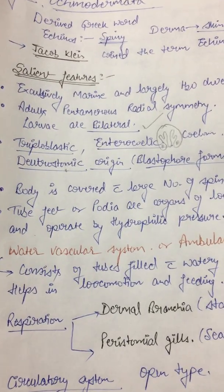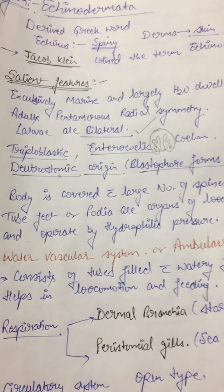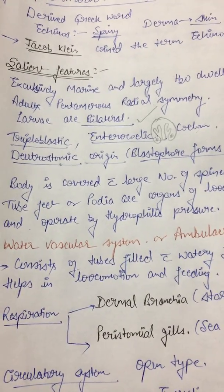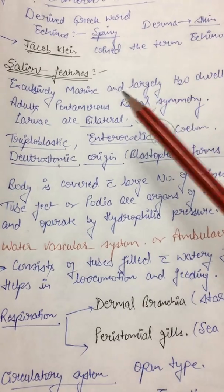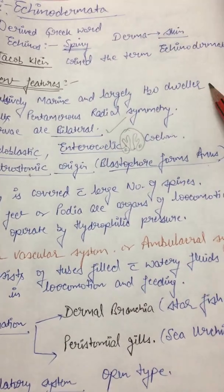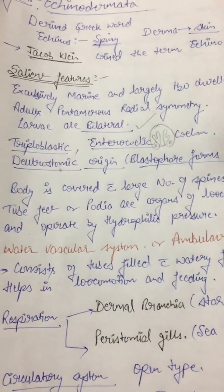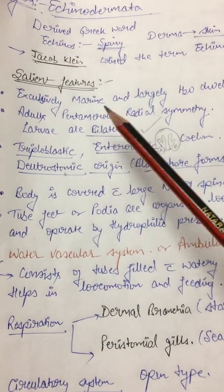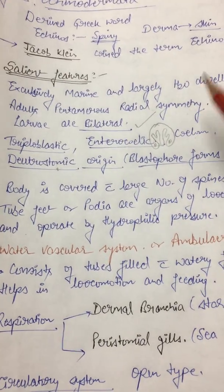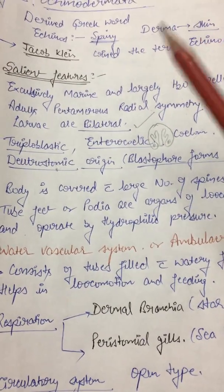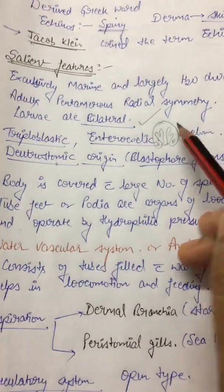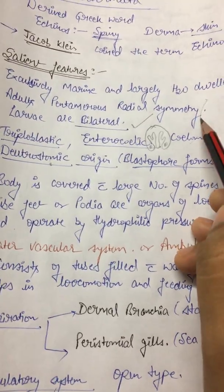These are the characteristic features of Echinodermata. First, they are exclusively marine and largely water dwellers. Their adults show pentamerous radial symmetry, whereas the larval form shows bilateral symmetry. This is very important — if you are writing features of Echinodermata and you forget this point, you lose marks.